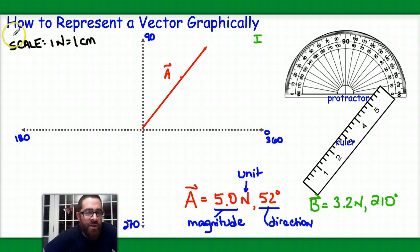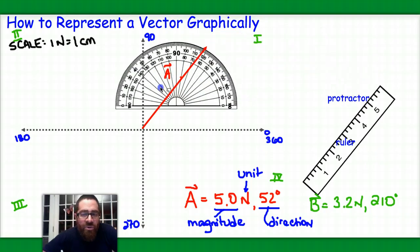So this is the first quadrant. Here's our second quadrant over here. This is the third quadrant. And over here is the fourth quadrant. Which quadrant is vector B going to be in? Hopefully, you've answered the third quadrant.